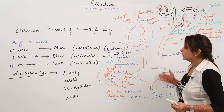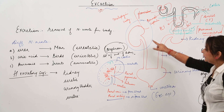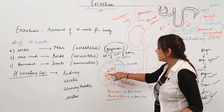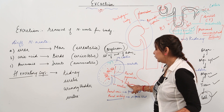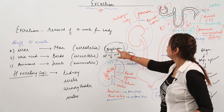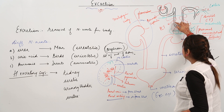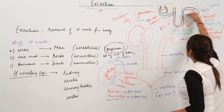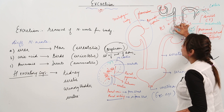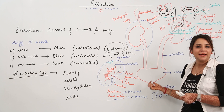To summarize: the excretory system consists of two kidneys, ureters, bladder, and urethra. The kidney has an outer cortex and inner medulla, with renal pyramids and a hilum from where the ureter originates. The structural and functional unit is the nephron — consisting of the Malpighian body (Bowman's capsule with glomerulus), PCT, loop of Henle, DCT, and collecting tubule. Now we will take up the mechanism of urine formation in the next topic.